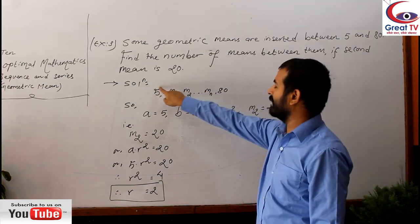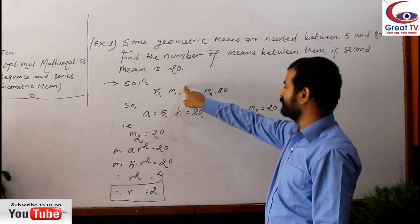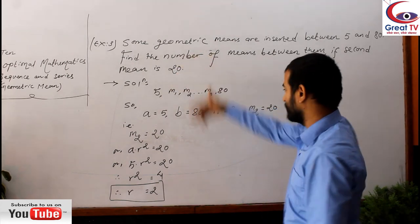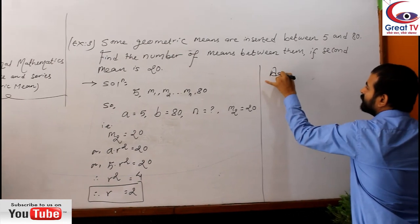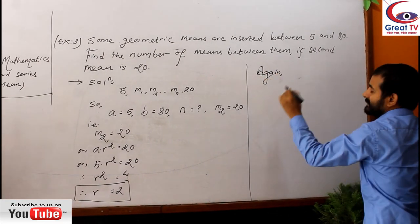Now 2 will be multiplied: 5, 10, 10 into 2 is 20, so second 20, right. Now we have a last job to do is to find out the number of means.